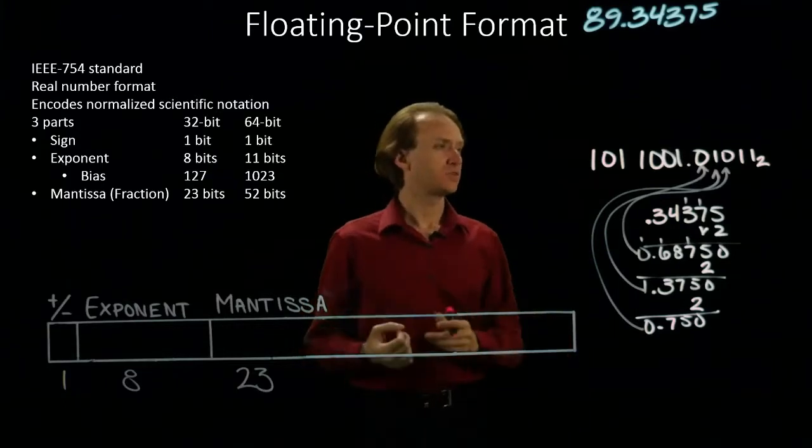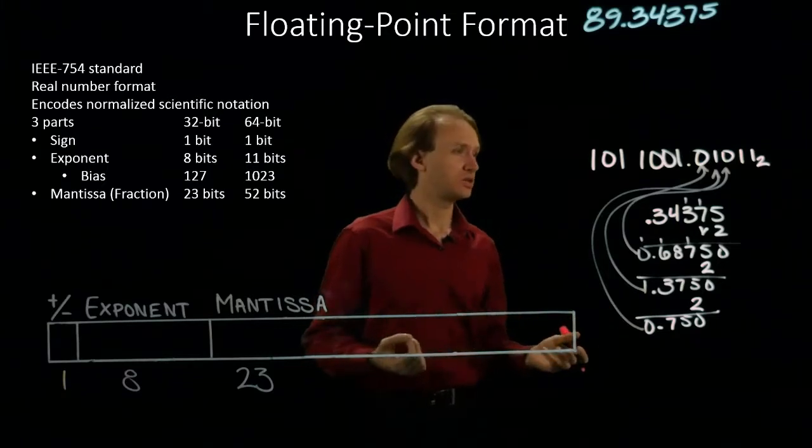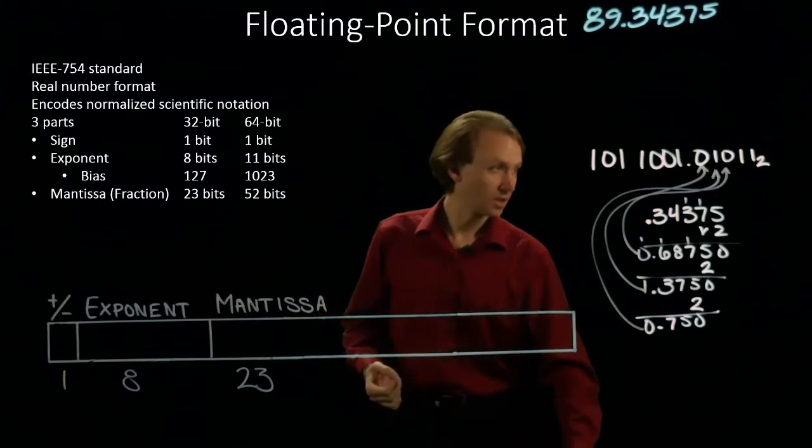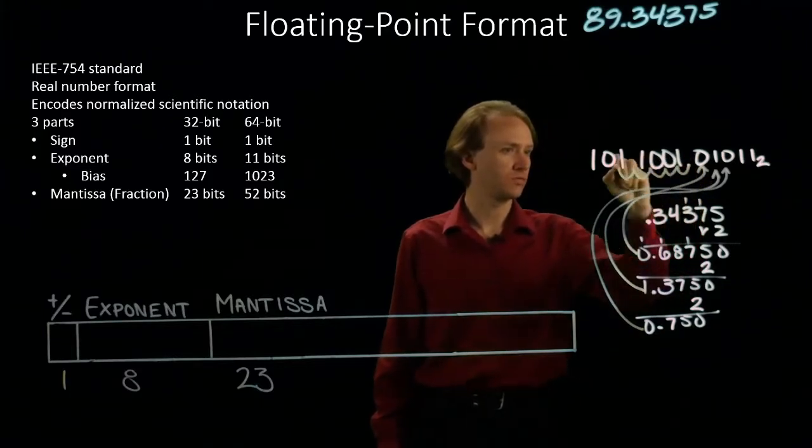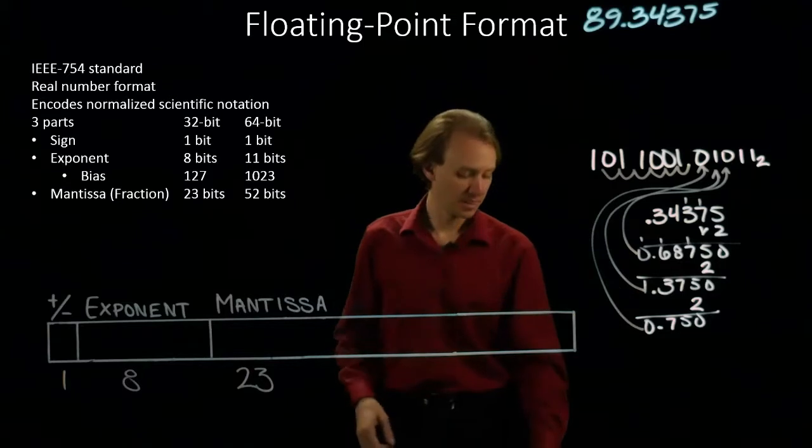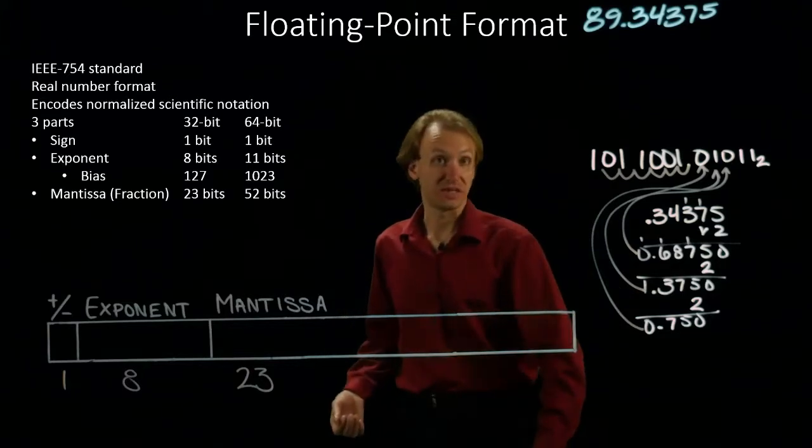Next, I need to convert this to normalized scientific notation. In this case, my binary point needs to move over 1, 2, 3, 4, 5, 6 places. So, I'll have an exponent of 6.